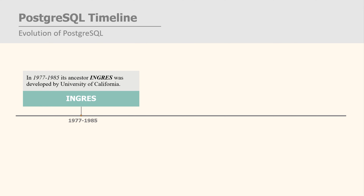The journey of developing PostgreSQL started way back in 1977 to 1985, when its ancestor Ingres was developed by the University of California.